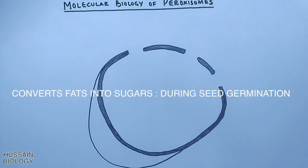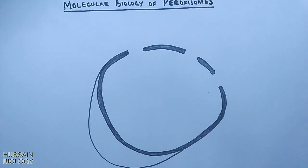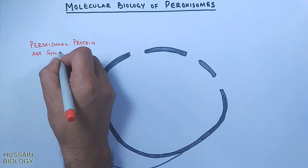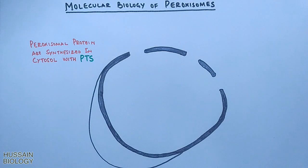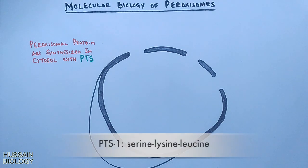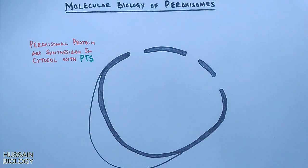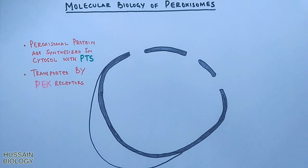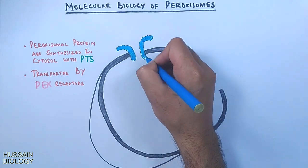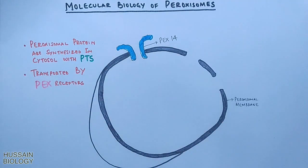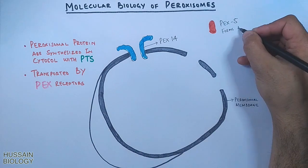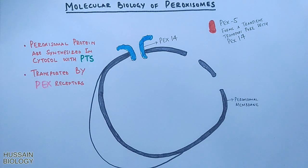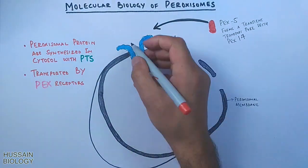Now getting to the proteins of peroxisomes. Peroxisomal proteins are synthesized in the cytosol with a PTS1 signal — that is serine, lysine, and leucine at the extreme C-terminus. These proteins are transported into peroxisomes by PEX receptor proteins. PEX14 is located in the peroxisomal membrane, and PEX5 is in the cytosol, which comes in and binds with PEX14, forming a transient pore.